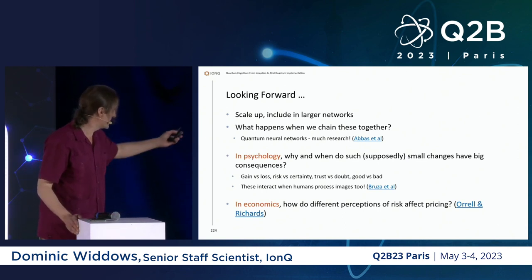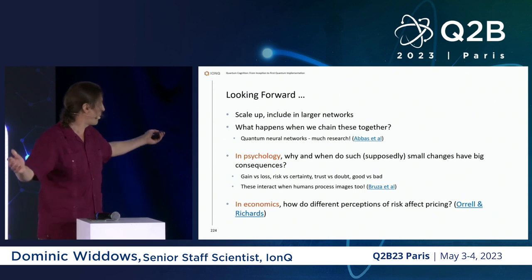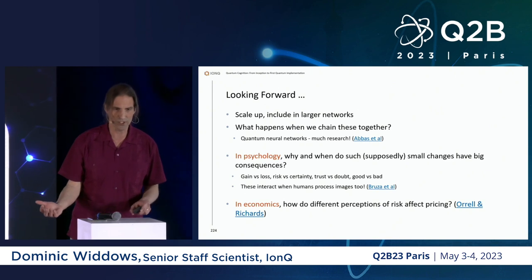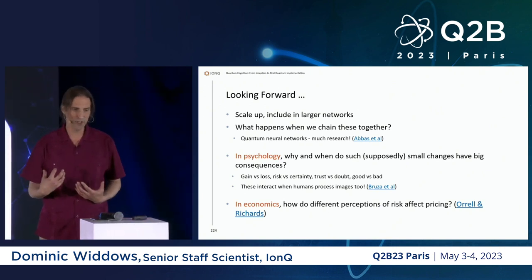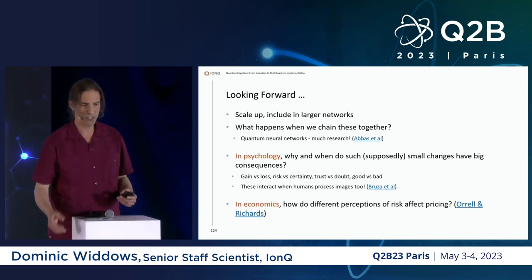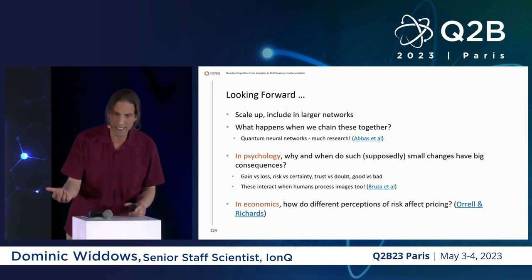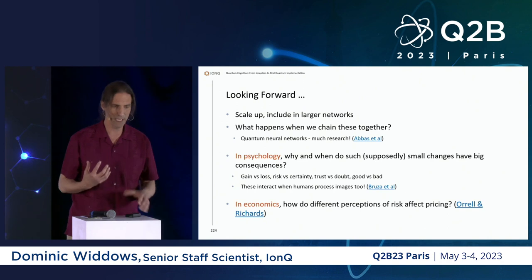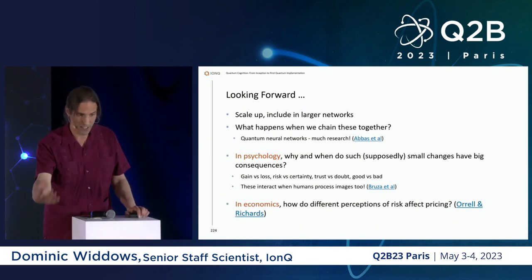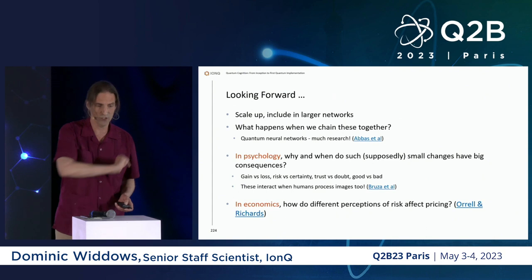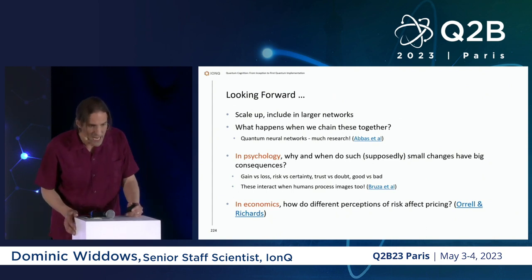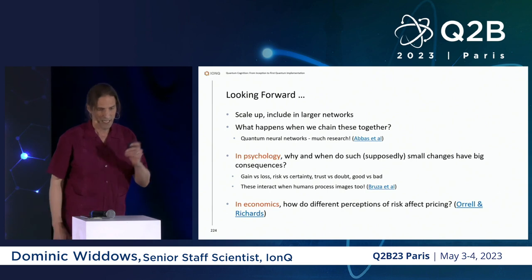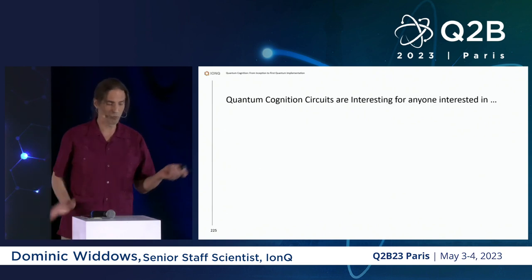In psychology, small changes in how questions are framed can have large consequences because we perceive things like gain or loss, risk or uncertainty, trust or doubt in ways that affect how we interpret all subsequent information. This applies to images as well as text — work by Peter Bruza and colleagues — and in economics it affects risk perception and pricing.